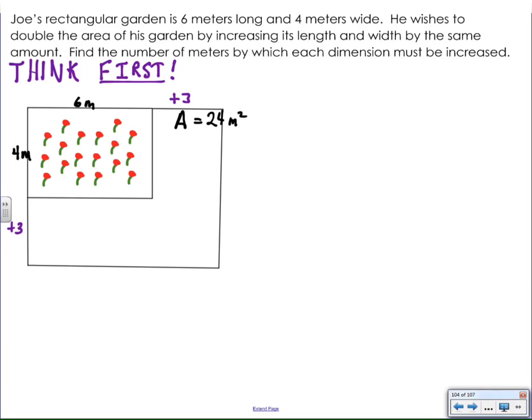I'm going to add three meters to both sides of the garden. So this is six meters plus an additional three and this is four meters plus an additional three. And as you can see, I have a pretty extensive increase in the area. It looks like more than double to me, but let's find out. To calculate the area then, I need the length times the width.